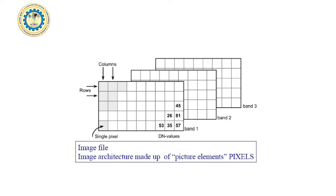An individual pixel is always a square mark. The reflectance value of these pixels is given as the DN (digital number) value. There is a single pixel, a row, a column, and different bands. A band is a single range of the electromagnetic spectrum — as explained when discussing electromagnetic radiation, the blue band has some range, the red band has some range. A combination of these bands is used to interpret the picture.